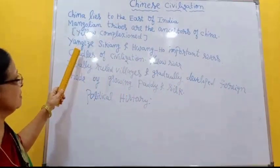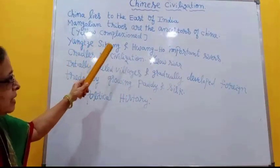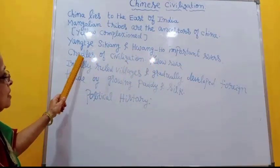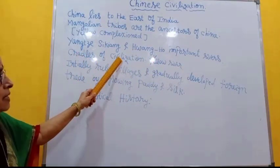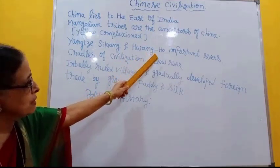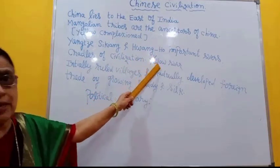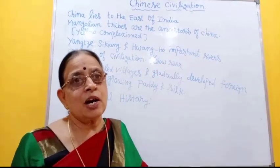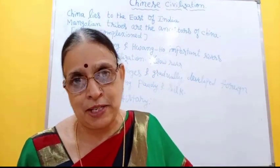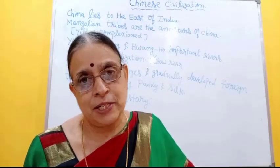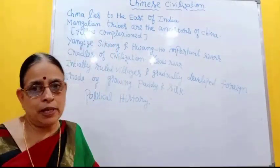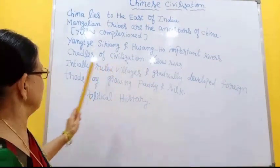These important rivers — Yangtze, Kiyang, and Hango — are called the cradles of civilization, the birthplace of Chinese civilization. Hango river is also called the Yellow River. It is called the sorrow of China, because often there will be heavy floods that take the lives of Chinese people. Even today, there will be floods in this river.